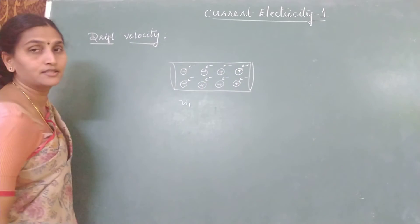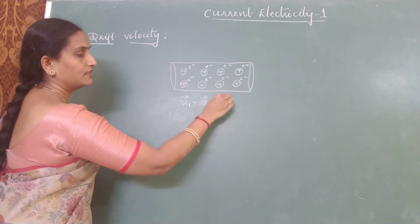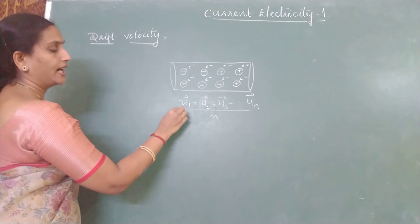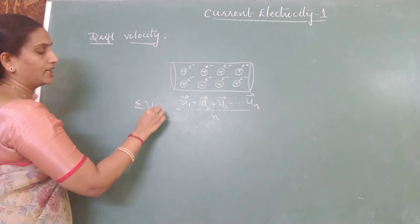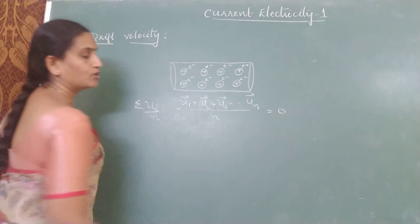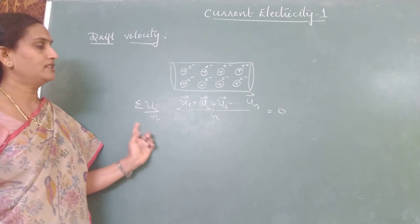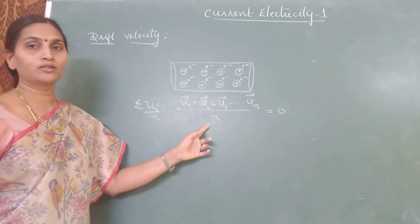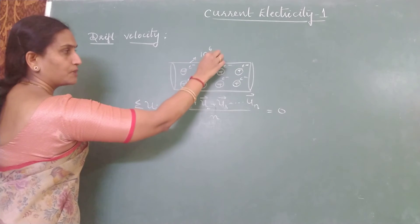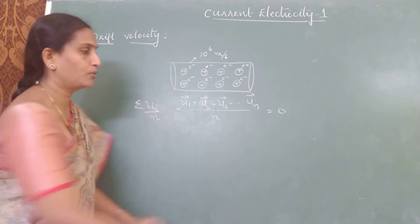In the absence of an external field, if I observe the average velocity of all these electrons — with u₁, u₂, u₃ representing the velocities — the sum Σuᵢ/n (average velocity) is always equal to zero, because for every electron moving in one direction there is an electron moving in the opposite direction. So the average thermal velocity of the electrons is zero. Note that the order of these individual speeds is very high — each electron may be moving at around 10⁶ m/s — but on average, the velocity is zero.